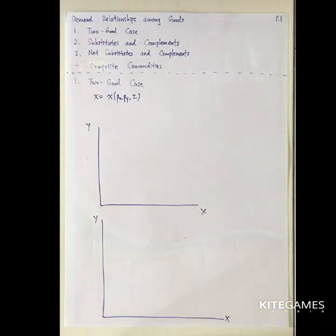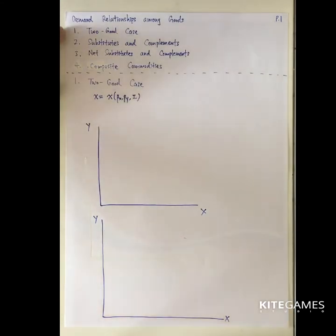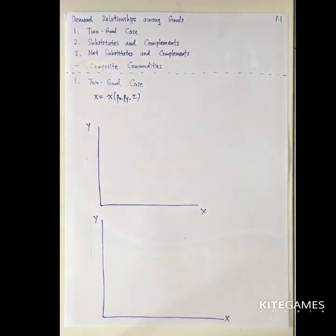In this video, we will talk about the demand relationship among goods. Basically, we will take a look at the goods, whether they are substitute or complement, or unrelated. First, we will talk about the two-good case. Second, we will talk about the substitutes and complement concepts. Third, we will go to the Hicksian demand course and take a look at the net substitutes and complement. Finally, we will try to model the composite commodities.